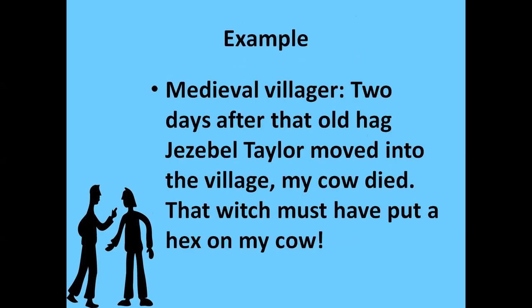For example, a medieval villager says: 'Two days after that old hag Jezebel Taylor moved into the village, my cow died. She must have put a hex on my cow.' This illustrates how superstitions often originate in post hoc thinking — like believing that because something bad happened after a black cat crossed your path, black cats are bad luck. That reasoning is a fallacy.